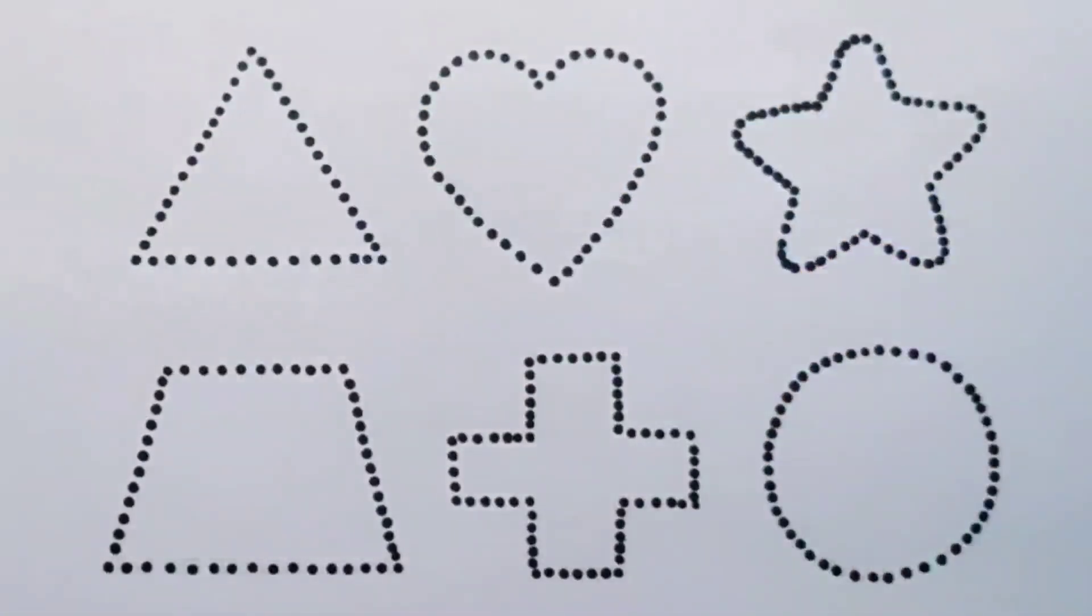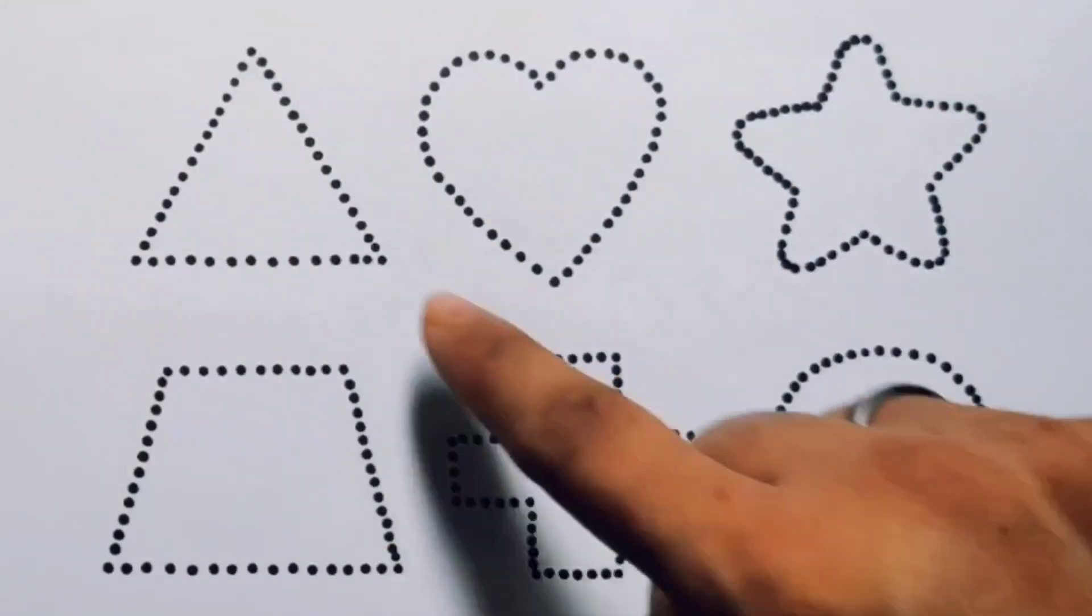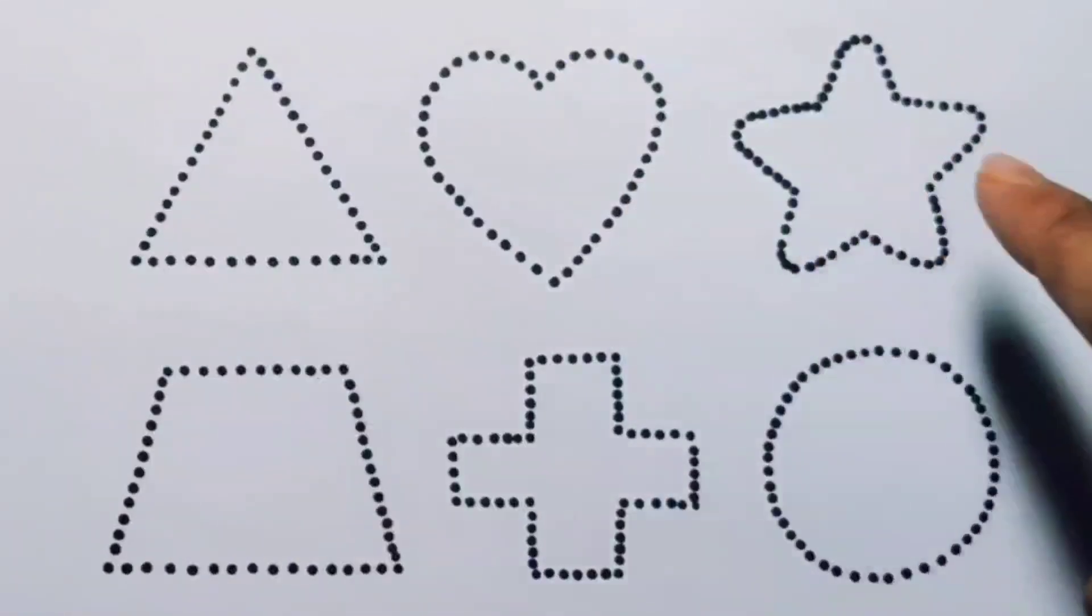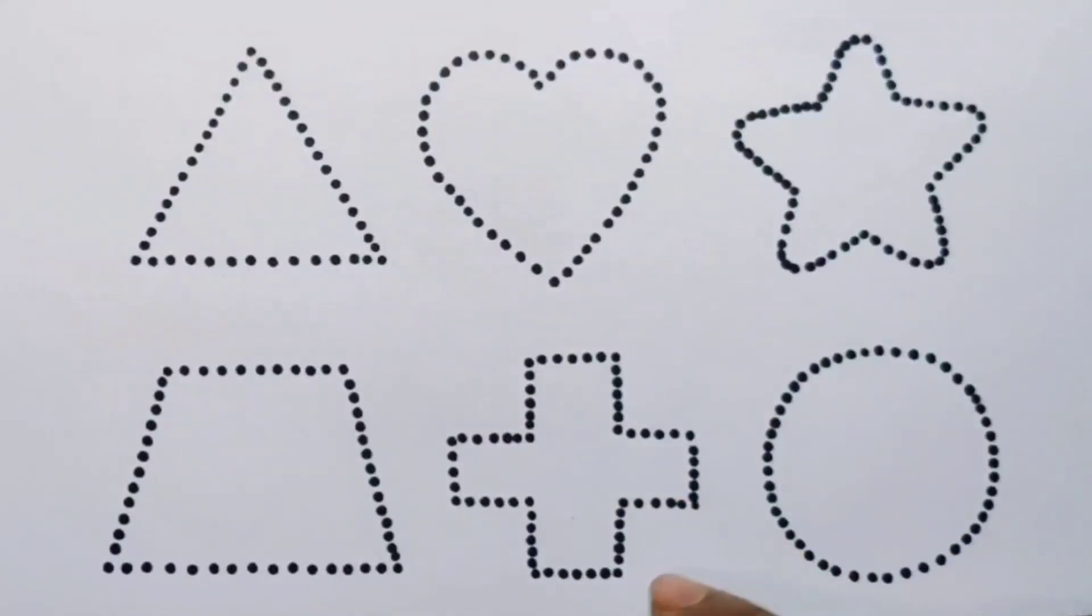Now let's learn the 2D shapes: triangle, heart, star, trapezium, cross, and circle.